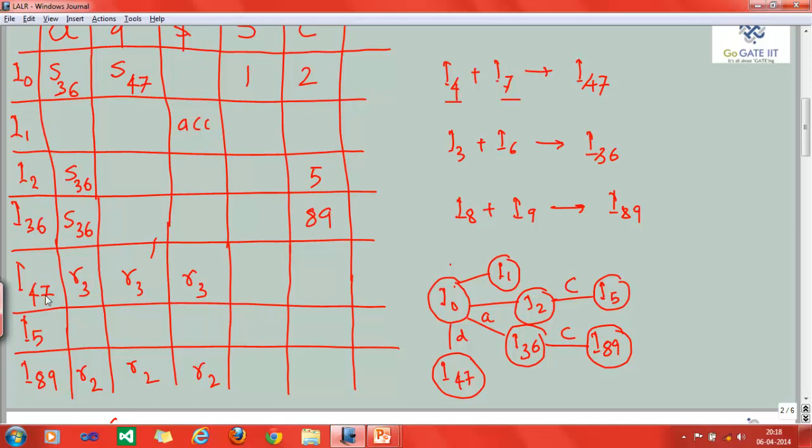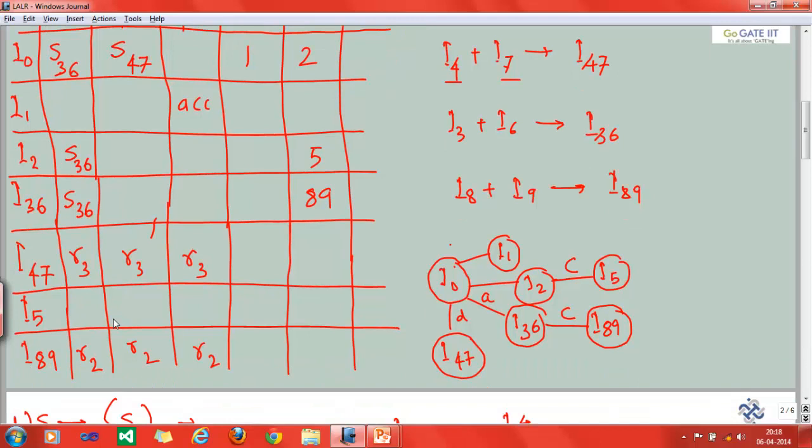Instead of previously having 10 states, we had total 10 states in case of CLR 1 parser. And this will be the final generated LALR parser. You can see that I0 gives I1, I0 gives I2, I2 gives I5. This can be generated from the CLR parser also.